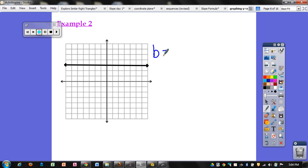Example 2. So I need to find my b. My y-intercept is at this point right here. 0, 3. The y-coordinate is 3, so b is 3.